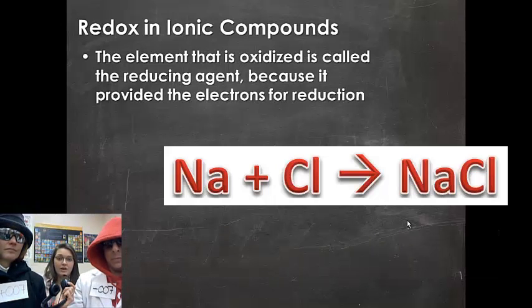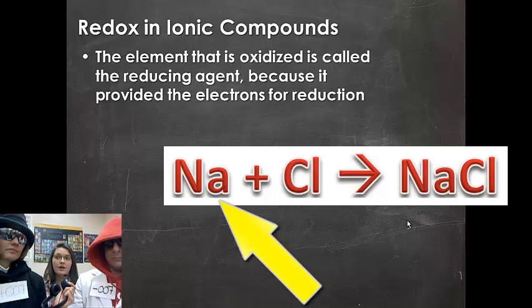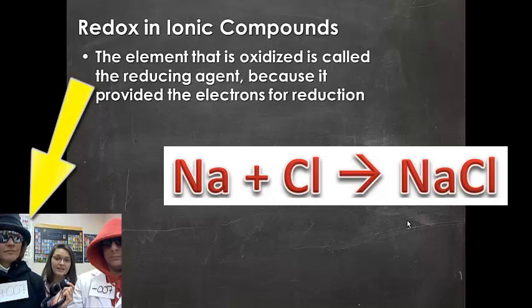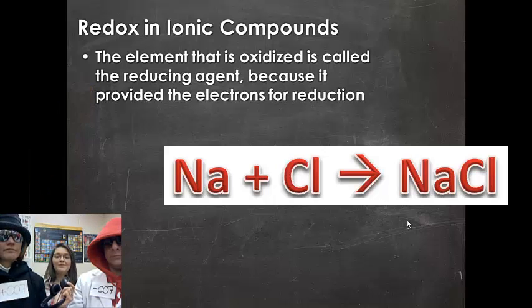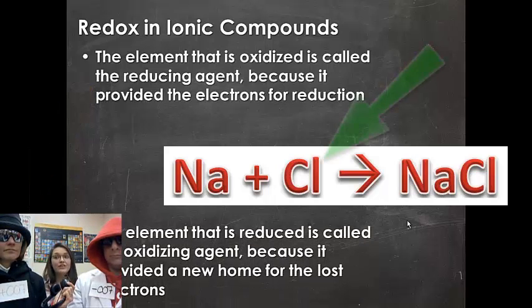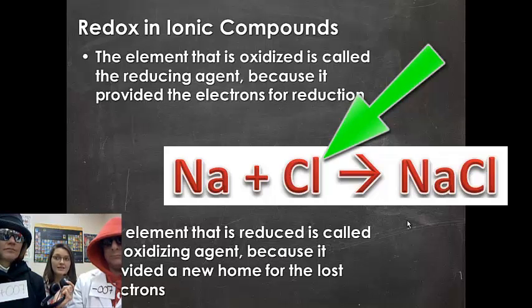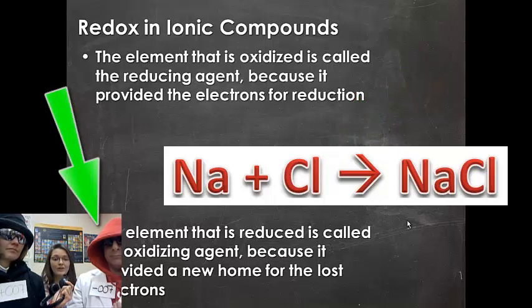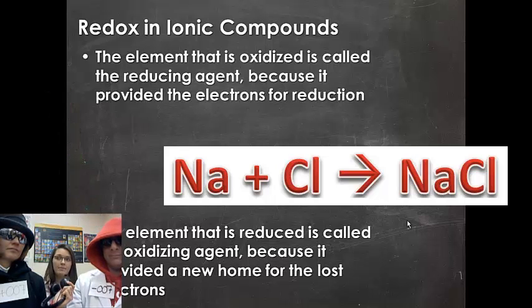When we put the whole reaction together of sodium and chlorine, we have one element that is being oxidized — that's our sodium. And when that happens, we have to call it also a reducing agent, because it's providing the electrons for the reduction to occur in the chlorine. We also have the element that's being reduced — reduction is occurring in that chlorine, as it's gaining an electron. So we call chlorine our oxidizing agent, because it's giving a new home to that lost electron and taking in the electron that was given up by the sodium.